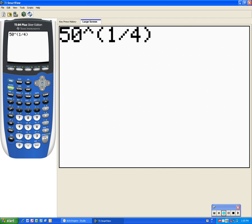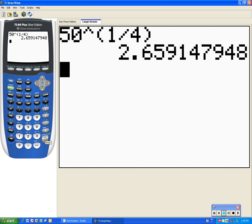50 to the one-fourth power, and then enter, and we get our result. It said to the nearest hundredth. Remember the hundredths place is two decimals. The rounding rules: the nine will cause the five to become a six.